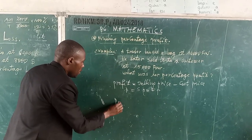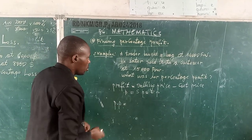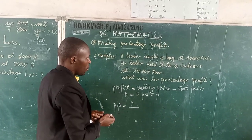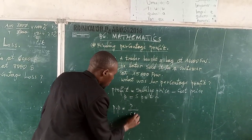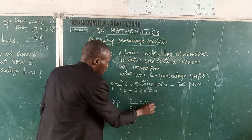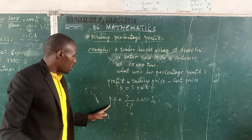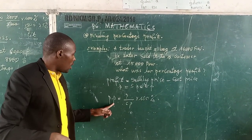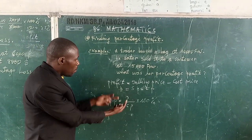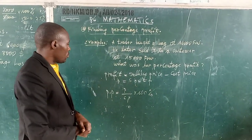And also for percentage profit, we use: percentage profit is equal to profit (P) divided by cost price (CP), times 100%. This is the formula for how to find percentage profit. One P means percentage, another P means profit. Percentage profit equals profit divided by cost price, times 100%.